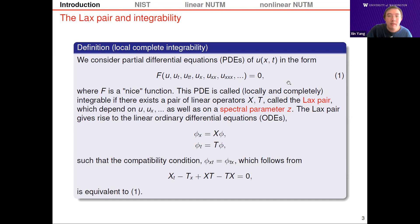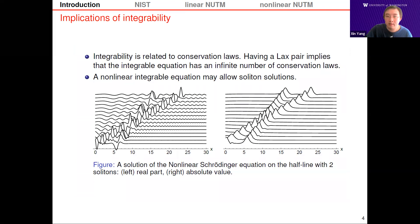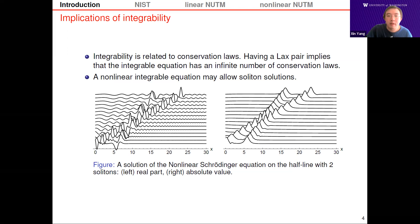Having a Lax pair is very nice. Integrability is related to conservation laws — with the Lax pair, the integrable equation has an infinite number of conservation laws. Also, nonlinear integrable equations may allow soliton solutions. These are solutions that are localized, smooth, and propagate through the medium preserving their shapes. Here are two plots of solutions of the nonlinear Schrödinger equation containing two solitons. The left plot shows the real part; after taking the absolute value we get the right plot, showing more straightforwardly that the two solitons propagate to the right and preserve their shape after interaction.